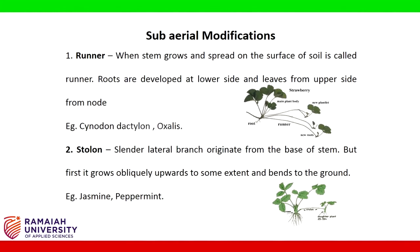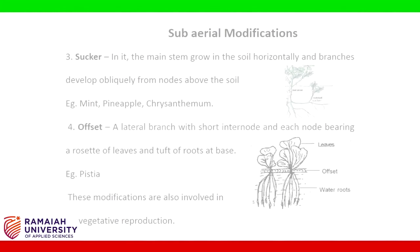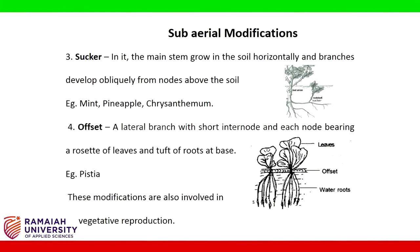Example for stolon: jasmine, peppermint. Sucker: the main stem grows in the soil and branches develop obliquely from nodes above the soil. Example: mint, pineapple, chrysanthemum. Offset: a lateral branch with short internodes, each node bearing a rosette of leaves and a tuft of roots at the base. Example: Pistia. These sub-aerial modifications are also involved in vegetative propagation.